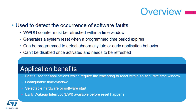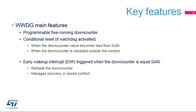An early wake-up interrupt can be generated before a reset happens to perform a system recovery or manage certain actions before a system restart. When the Window Watchdog is activated, a reset can occur when the down counter value becomes less than 0x40, or when the down counter is reloaded outside the time window. An early wake-up interrupt can trigger any action when the down counter reaches 0x40. The EWI status register can be used to reload the down counter to avoid generating a reset or to manage system recovery and context backup operations.